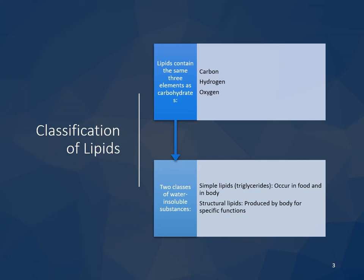Because lipids contain less oxygen in proportion to hydrogen and carbon than carbohydrates, they are higher in calories. The two classes of water-insoluble substances are simple lipids — triglycerides, which occur in food and in the body — and structural lipids, which are made by our bodies for very specific functions. Triglycerides have one or more fatty acids, and compound lipids include those with carbohydrate, phosphate, and nitrogenous compounds.